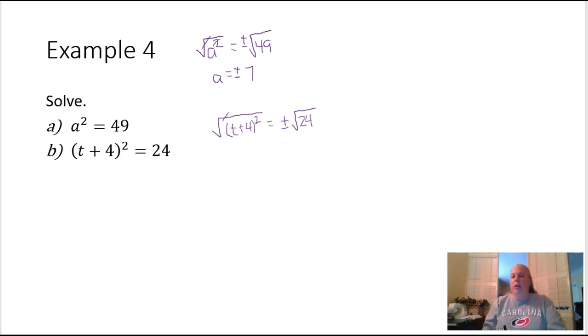Just like before, the radical and the two will cancel. That's going to leave me with just the T plus four. So this is just the part that was in parentheses.